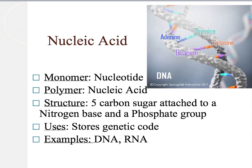The last macromolecule we'll be talking about is nucleic acid. The monomer, or the single unit of a nucleic acid, is called a nucleotide. The polymer, or the large unit, is called a nucleic acid. The structure is a five-carbon sugar — that five-carbon ring, similar to what we talked about with carbohydrates — which is attached to a nitrogen base and a phosphate group. All living things use these to store their genetic code, their DNA, the thing that codes for physical characteristics. Even bacteria and plants have a genetic code.